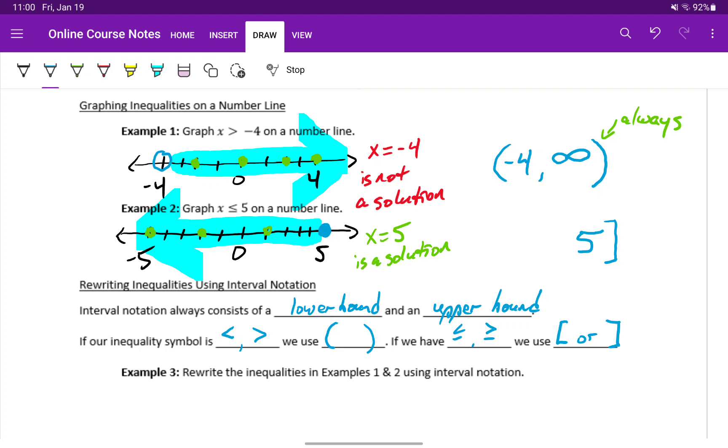Since any value less than five would be a solution to this inequality statement, our lower bound will be negative infinity. And again, we always use a rounded parentheses whenever we have an infinity at one end of our interval.